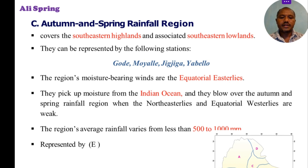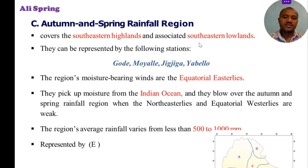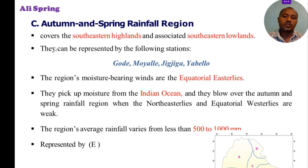The autumn and spring rainfall region covers the south-eastern highlands and the associated south-eastern lowlands. Most of the Somali region and some parts of the Oromia and South Ethiopia are represented by this region.